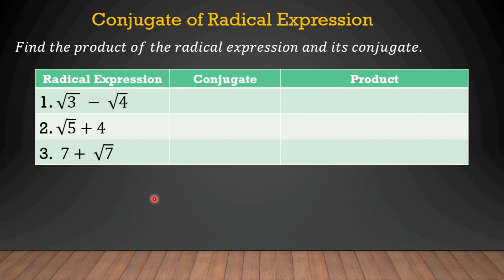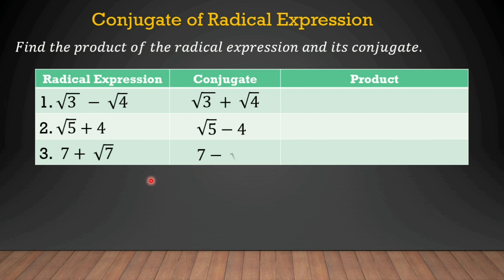For number 1: the square root of 3 minus the square root of 4. The conjugate of this expression is the square root of 3 plus the square root of 4. As you can see, we just changed the operation. For number 2, the conjugate of the square root of 5 plus 4 is the square root of 5 minus 4. And number 3, the conjugate of 7 plus the square root of 7 is 7 minus the square root of 7. That's how we find the conjugate.